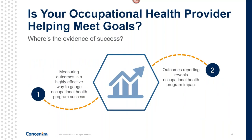Is your occupational health provider helping you meet your goals? Where is there evidence of success? If these are what you would expect from your occupational health provider, how do you know if they're helping you reach your workforce health goals? There needs to be a means to measure occupational health program progress based on your predefined goals — in other words, what are the outcomes? The CDC is a strong advocate of outcomes measurement in occupational health. In fact, the CDC's workplace health model includes recommendations that mirror the guidance provided in the CDC's framework for program evaluation in public health, where outcomes measurement is a vital part of program evaluation.